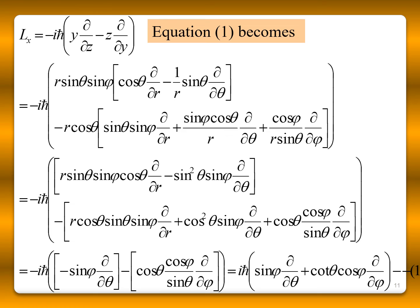Now we substitute all these values into Lx. Since Lx = −iℏ(Y ∂/∂z − Z ∂/∂y), we substitute the values of Y in terms of R, θ, φ, and ∂/∂z and ∂/∂y in terms of spherical coordinates. After substitution and simplification, we get: Lx = iℏ(sinφ ∂/∂θ + cotθ cosφ ∂/∂φ).